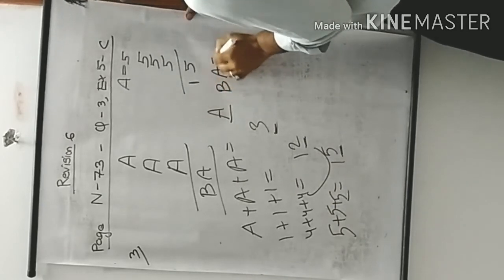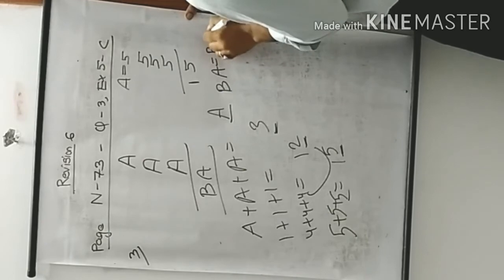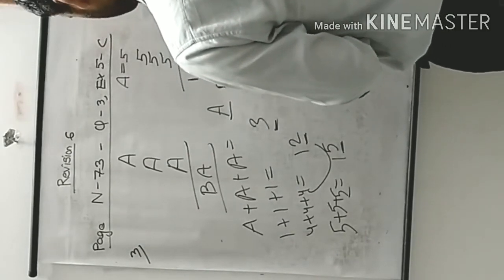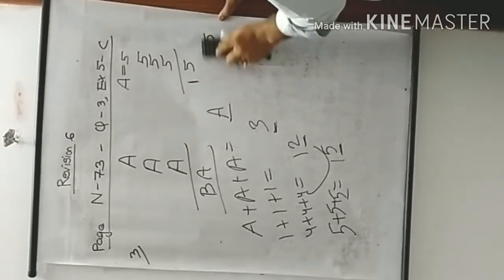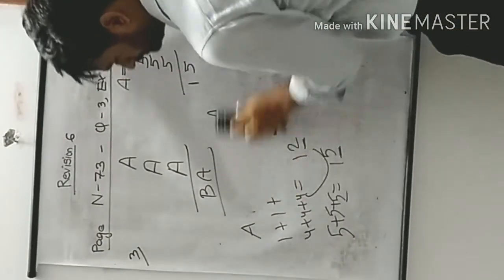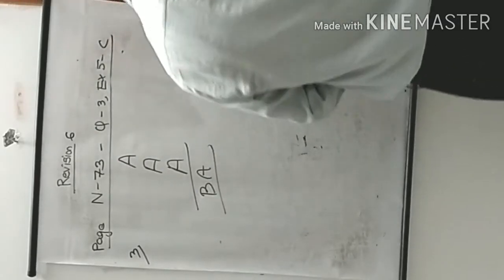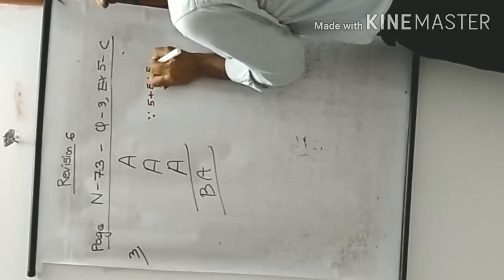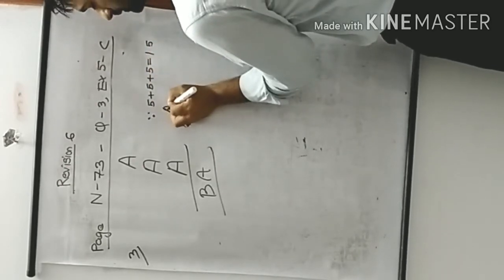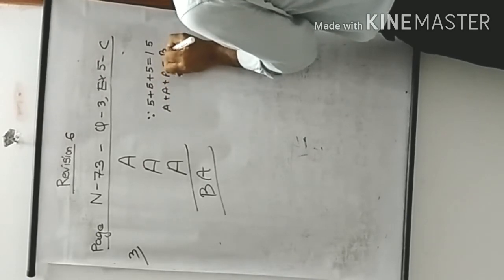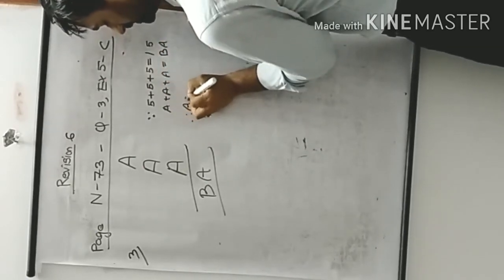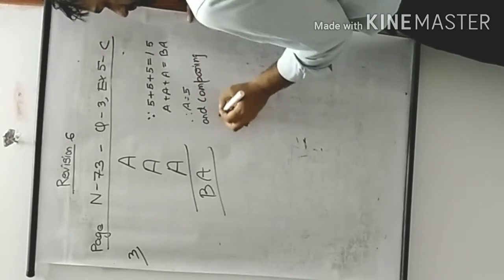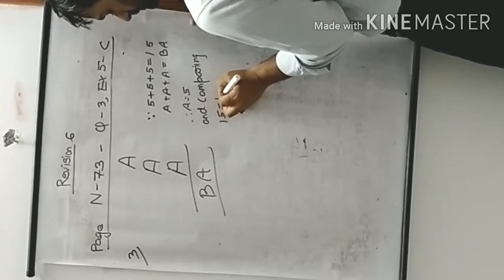Since 5+5+5=15, and BA=15, therefore A=5 and B=1. That is the answer.